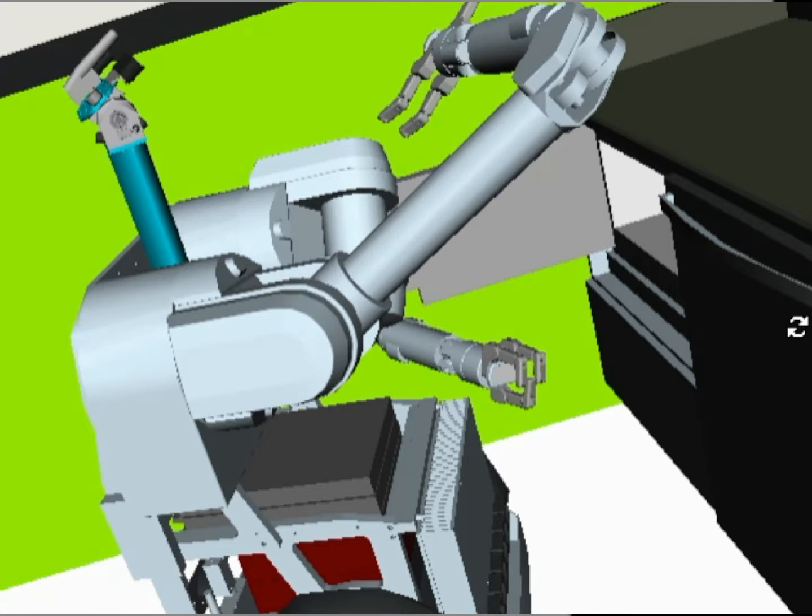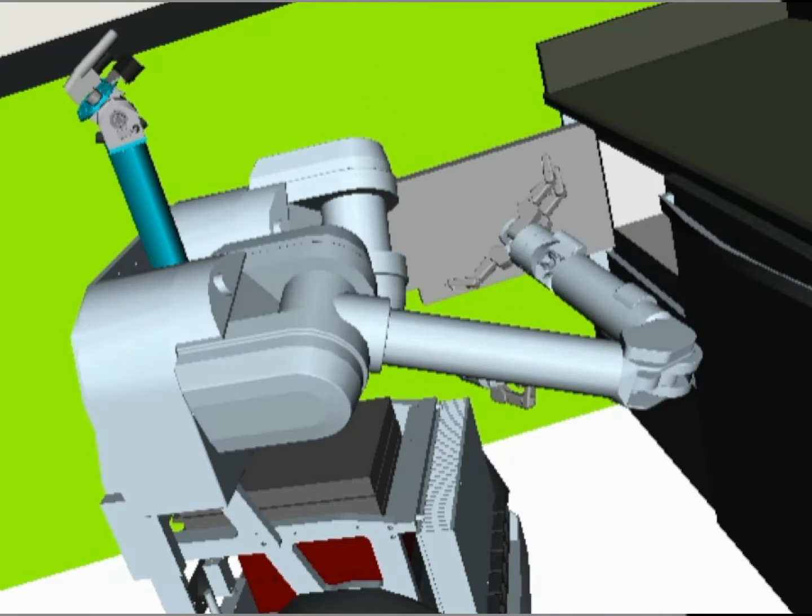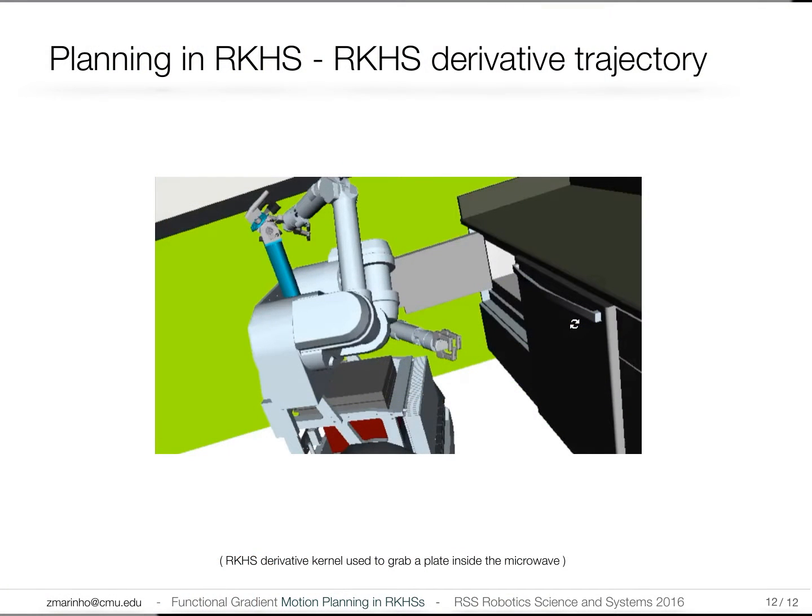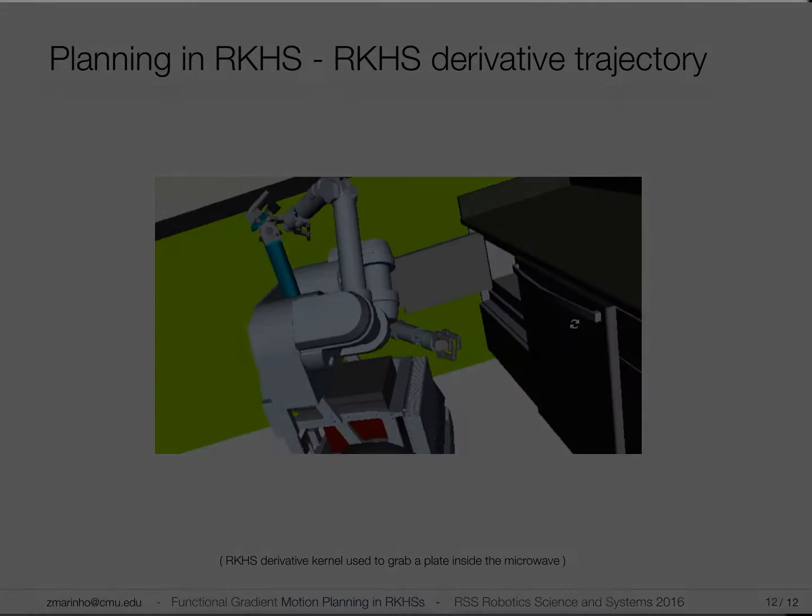In this work, we propose a general framework that allows to plan in function space directly, and depending on the norm of the space, we would optimize for different types of motion. We further derive an efficient update rule that optimizes the trajectory locally. Please refer to the paper if you want to know more about planning in RKHS. Thank you.